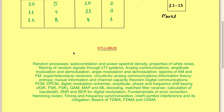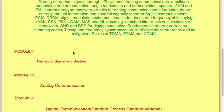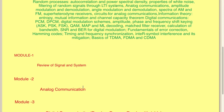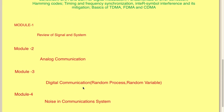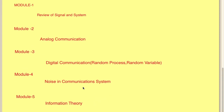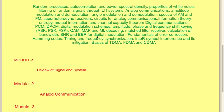I have divided the syllabus into some modules. Module 1 will contain a review of signals and systems. Module 2 will contain analog communication. Module 3 will contain digital communication including random variables and random processes. Module 4 will cover noise and noise in communication systems, and Module 5 will be information theory.